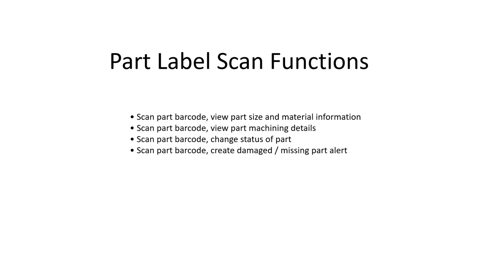You can also scan a part barcode and see the product-related information. Maybe you'd like a barcode scan to bring up a 3D image of the product, see where the part lives within the product, see other related parts or sub-assemblies such as fronts or drawers, or even see all the hardware related to a product. It is entirely possible to scan a part barcode and see all of the product-related information super easily.